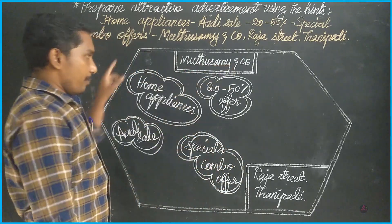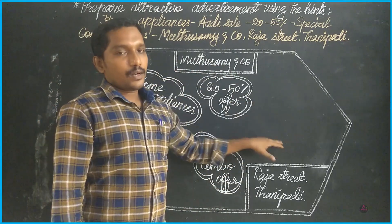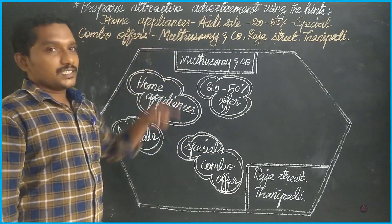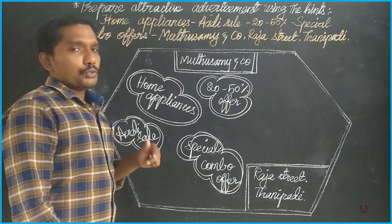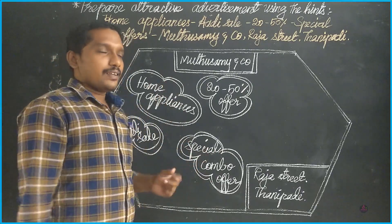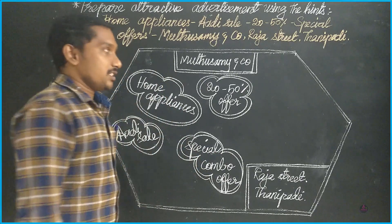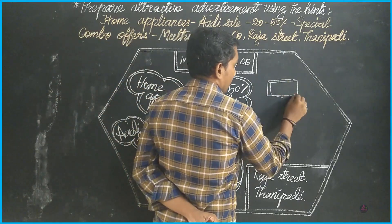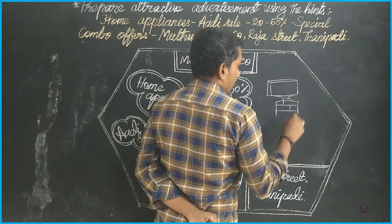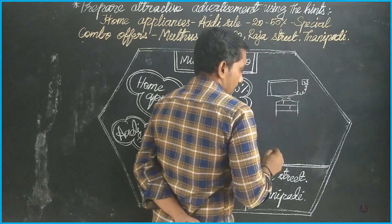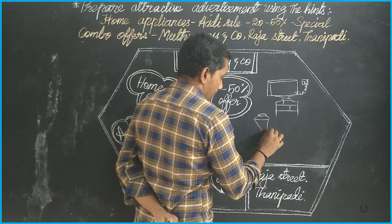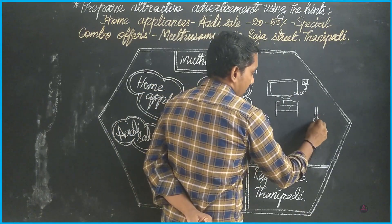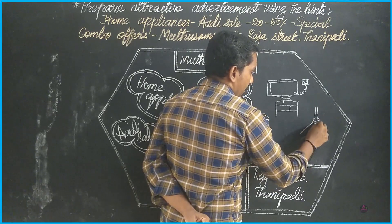This area we have to draw a picture related to this advertisement. This is actually home appliances, which means we have TV, fan, mixie, grinder. Likewise you can draw any related one or two pictures like this. I'm going to try a TV. This is TV box. It's simple. You can draw anything - a mixie and a fan. You can draw anything related to home appliances.